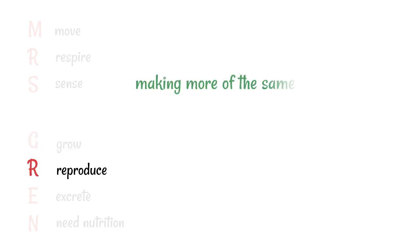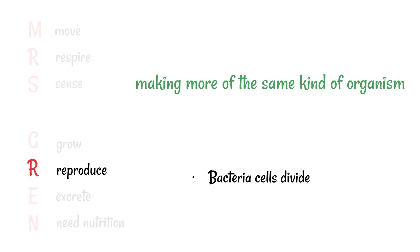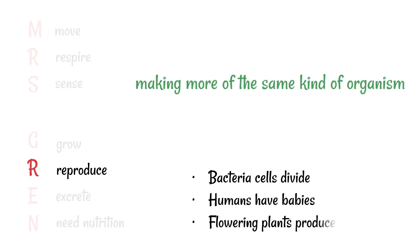All living things can reproduce, and this is making more of the same kind of organism. For example, bacteria cells will divide to produce more of them, humans have babies, and flowering plants produce seeds.